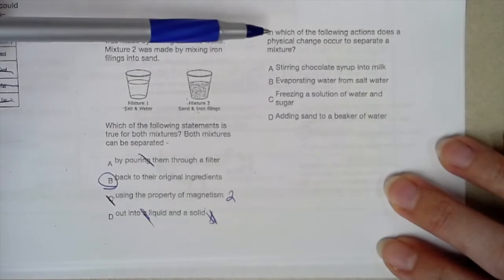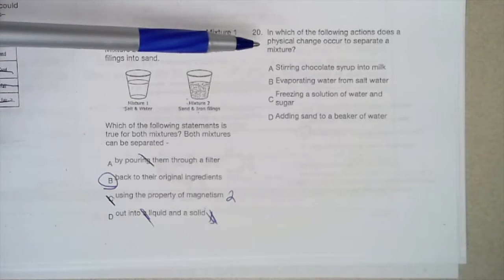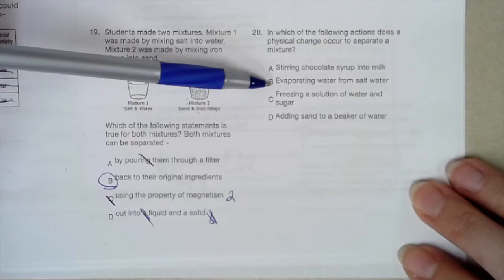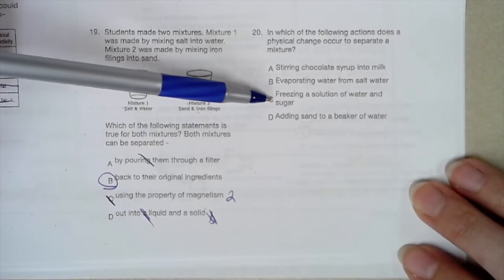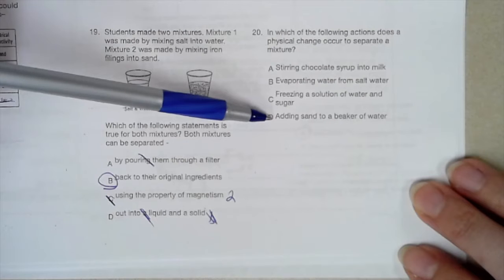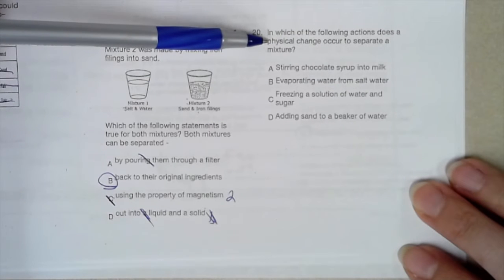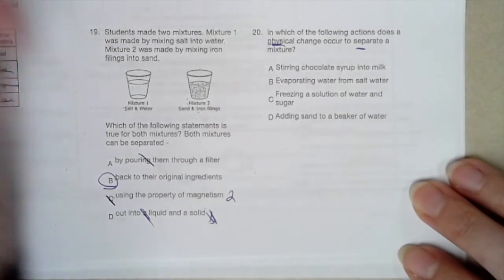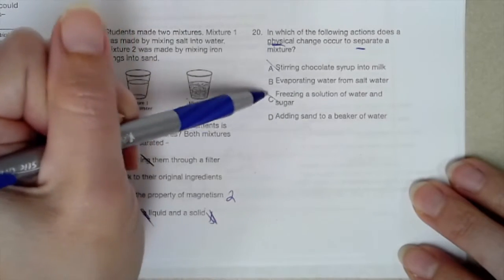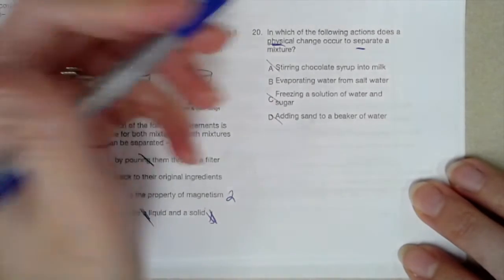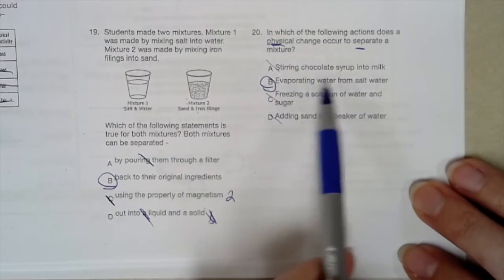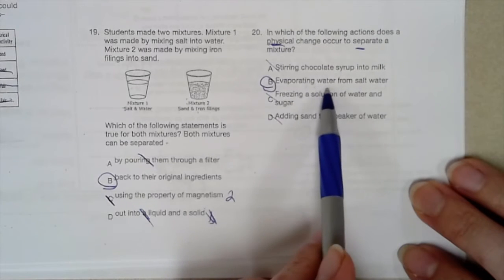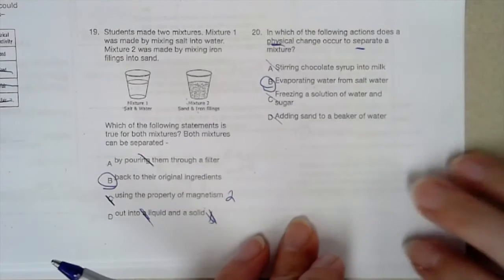In which of the following actions does a physical change occur to separate a mixture? Stirring chocolate syrup into milk. Evaporating water from salt water. Freezing a solution of water and sugar. Adding sand to a beaker of water. They want to know which one a physical change happens to separate a mixture. Am I separating a mixture in A, C, or D? No, I am not. But in B, I am separating a mixture of water and salt, and I am using a physical change to do so, because the water is changing from a liquid to a gas, and that is a physical change when we change states of matter.